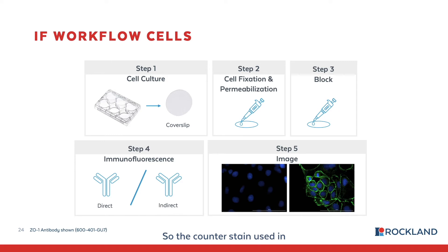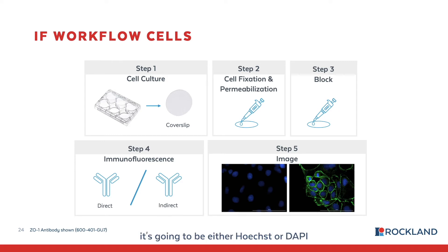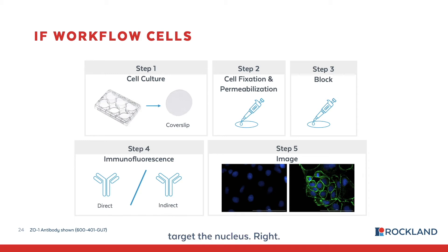The counterstain used in IF is a fluorescent counterstain. Most of the time it will be either Hoechst or DAPI, which targets the nucleus. So you can see the blue represents the nuclei, and the green represents the corresponding protein of interest.